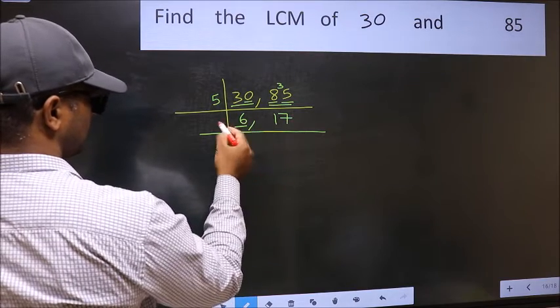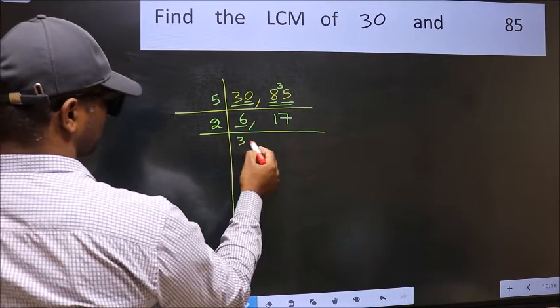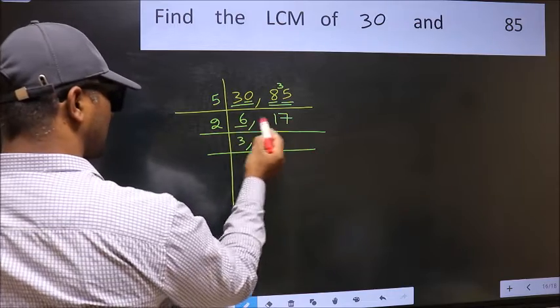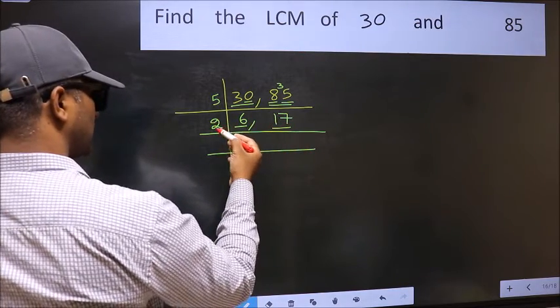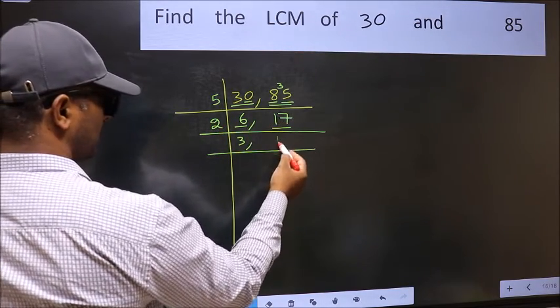Now here we have 6. 6 is 2, 3 is 6. The other number, 17, not divisible by 2, so you write it down as it is.